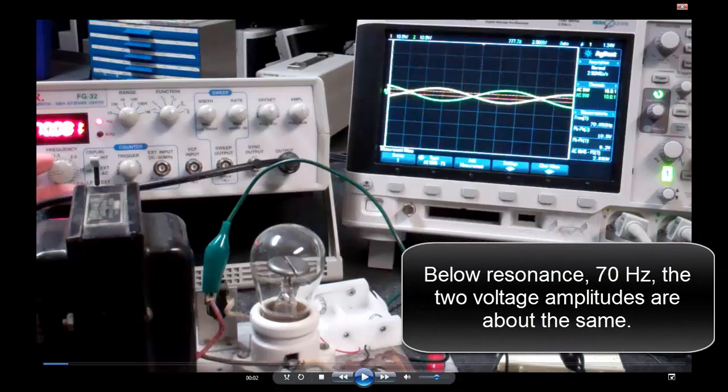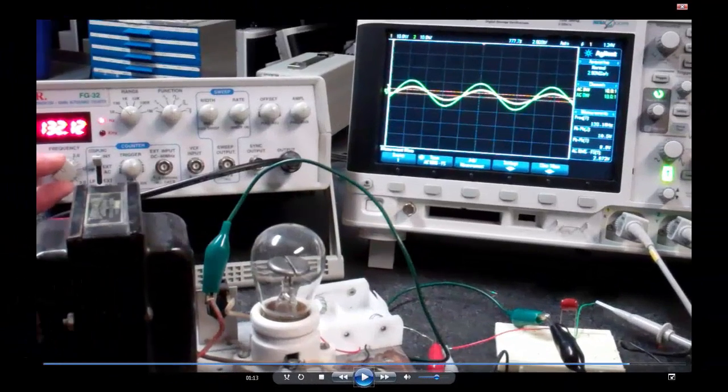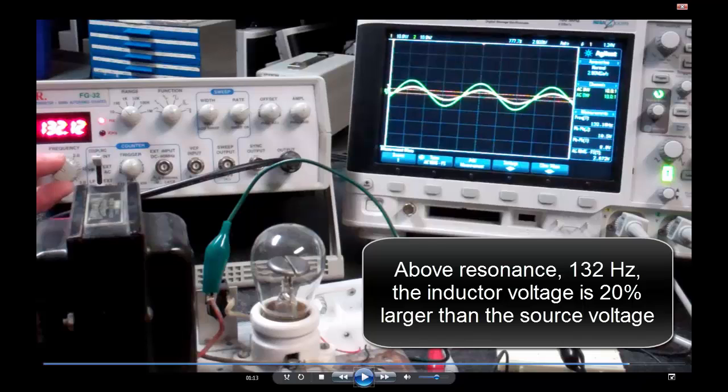The inductor voltage is 7.6 times the source voltage at resonance. Below resonance, 70 hertz, the two voltage amplitudes are about the same. Above resonance, 132 hertz, the inductor voltage is 20% larger than the source voltage.